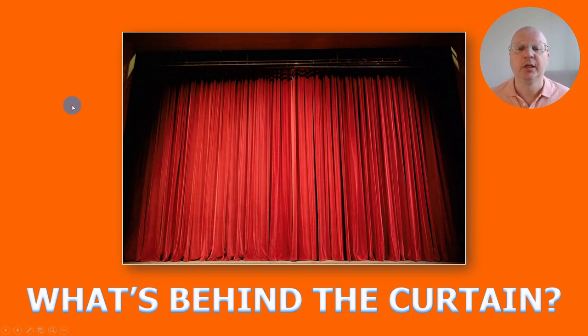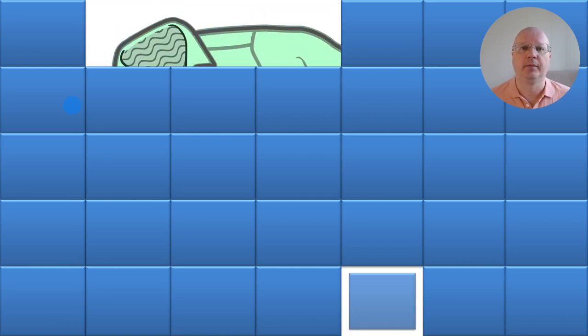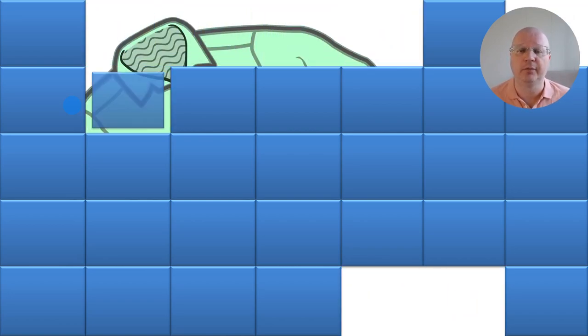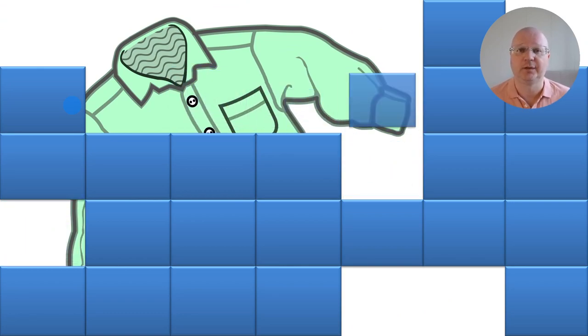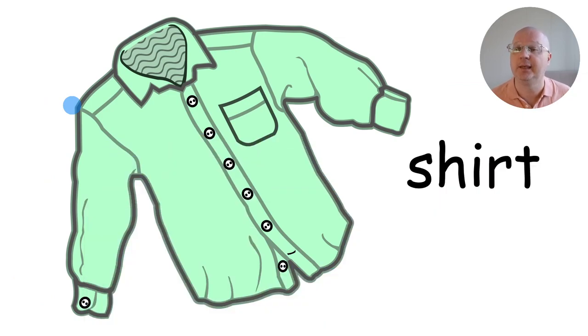First exercise. What's behind the curtain? In this exercise, you want to invite a student from each team. Then you are going to reveal slowly a picture and they need to guess what it is. This way they drill the vocabulary that you have just taught them. So let's take a look. If I click next, the picture is going to reveal itself slowly and the first student who says the word correctly gets a point for their team. So in this case, it's a shirt.